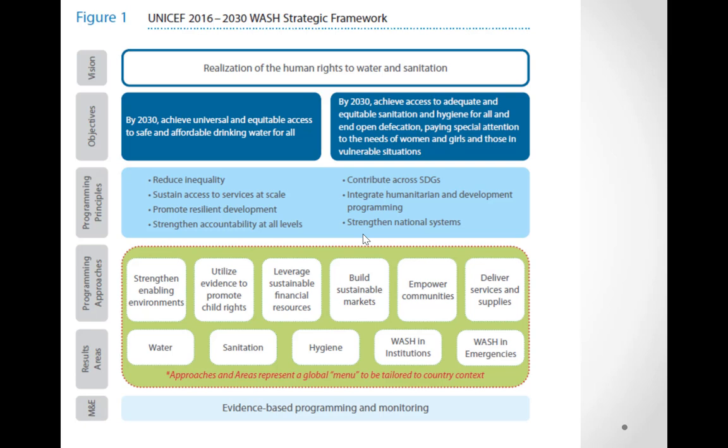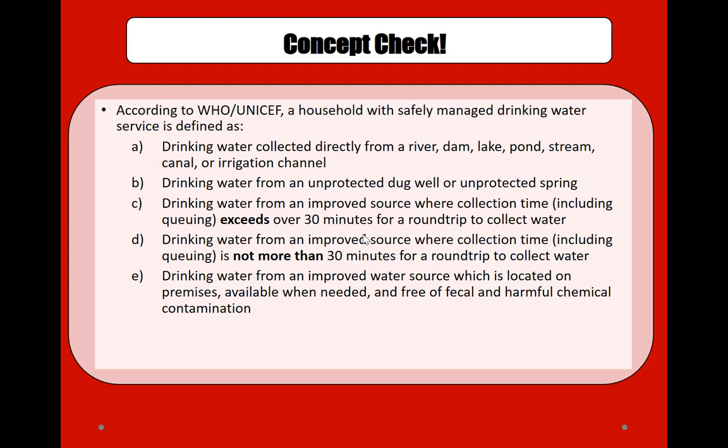The Sustainable Development Goals, or SDGs, are a set of 17 goals to guide global development to 2030. Goal number six is about ensuring the availability and sustainable management of water and sanitation for all. Achieving universal access by 2030 will be especially challenging for the 41 countries where over one-fifth of the population continues to use unimproved drinking water sources — mainly concentrated in sub-Saharan Africa but found in several other regions as well.